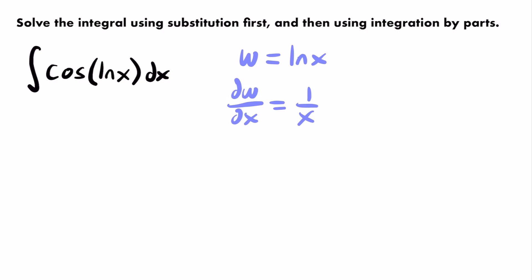Multiplying both sides by x and by dx (or cross-multiplying), we get x times dw equals dx. However, dx is multiplied by x, which is not yet in terms of w. So we need to determine what x equals in terms of w. Looking back at our substitution w = ln(x), we solve for x by making both sides the power of e.